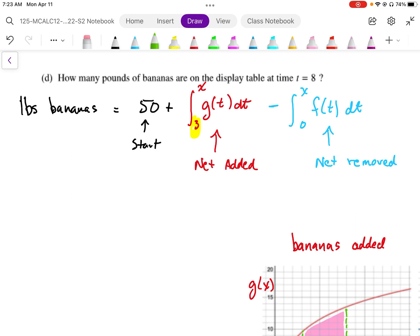After three hours, we're going to calculate the amount added. For the net removed, as we have here in blue, it's going to start at zero, because we start taking away the bananas from the beginning.